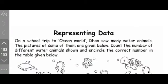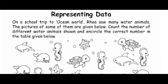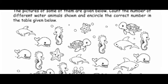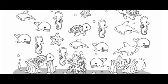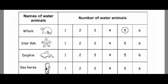Now I have one more question to solve — it's representing data. On a school trip to Ocean World, Rhea saw many water animals. The pictures of some of them are given below. Count the number of different water animals shown and encircle the correct number in the table given below. Here are some water animals — see the pictures carefully. The table has the name of the water animal and the number of water animals. The first one, whale, has already been circled — number of whales is 5. We need to do the same for the others.